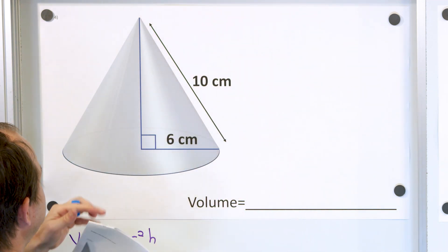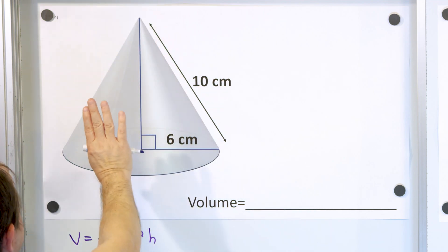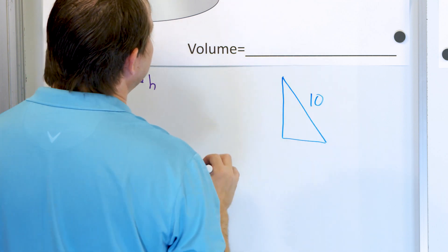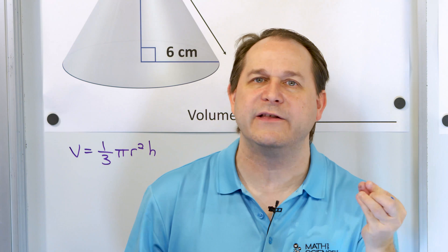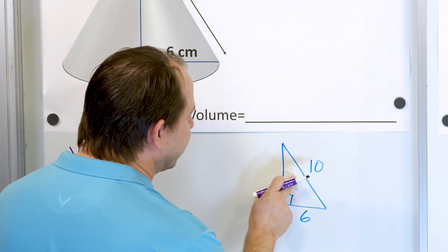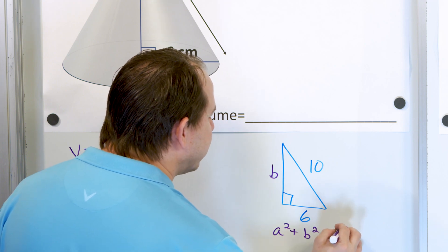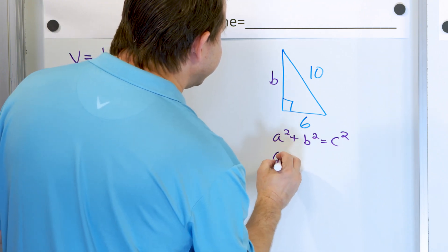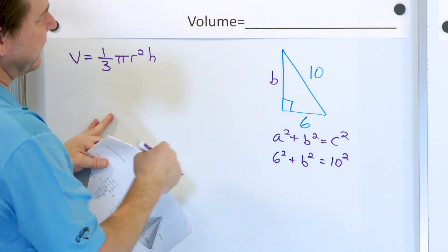If you kind of forget for a second that this is a cone and look at what's given, there's a triangle here. If I look at the profile, I have a right triangle. I'm told this side is 10, this side is 6, and there's a 90-degree angle, but I know I have to have the vertical height to solve the volume. Is there a way to find it? Of course — you already know the Pythagorean theorem. This is a right triangle: A squared plus B squared equals C squared. We put in 6 for A, B squared, and 10 for C, and we can find B — which is the height we need.